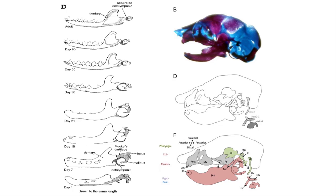This evolution is supported by evidence discovered in the fossil record, but it can also be observed in the embryology of the middle ear bones in modern mammals. During early development, the ear bones form next to the lower jaw, but as the animal develops in the womb, its ear bones move away from the jaw to be integrated within the skull.